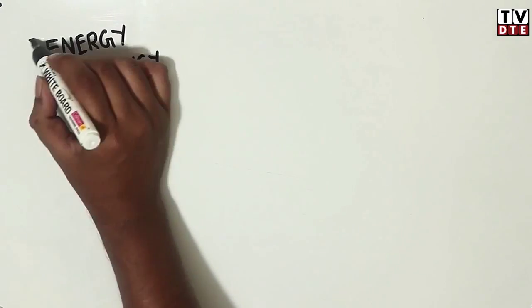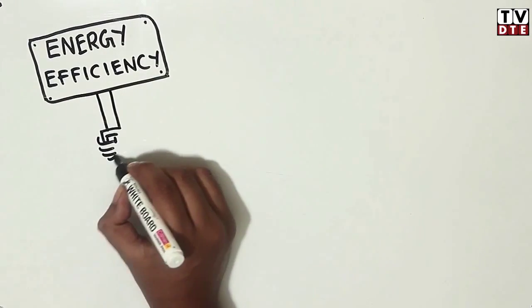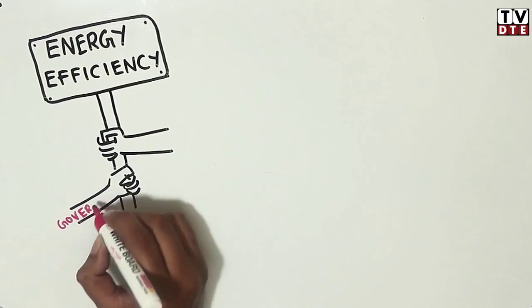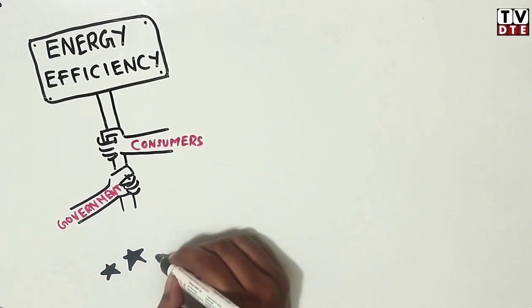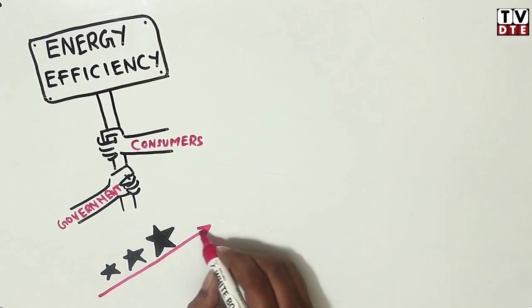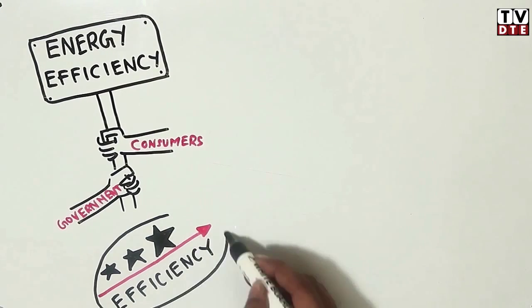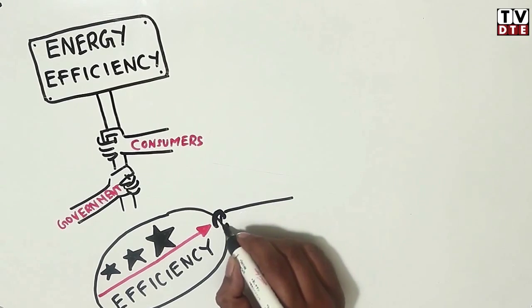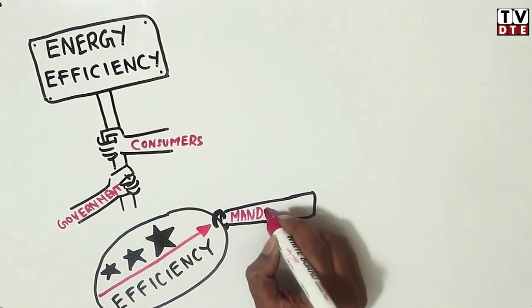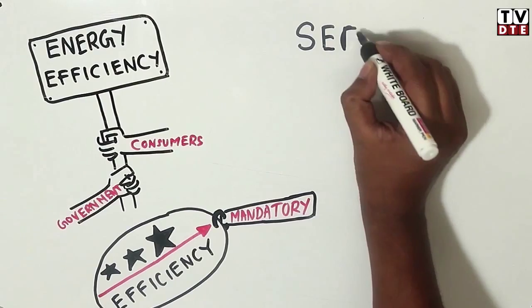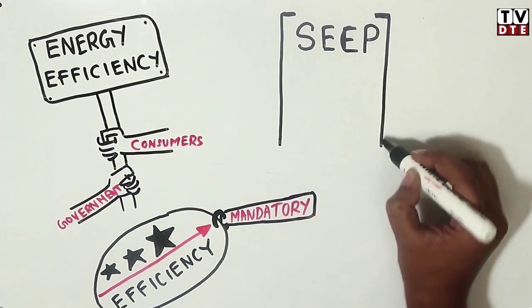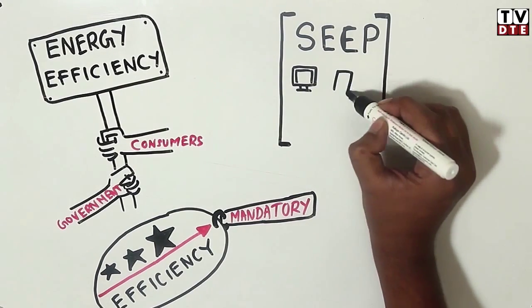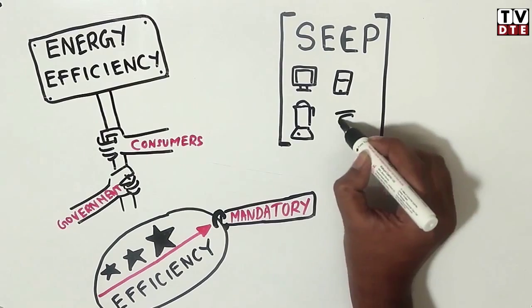The push for energy efficiency needs to come both from the policy makers as well as consumers. The government needs to rework its star rating program to achieve higher efficiency standards. At the same time, it needs to make it mandatory for all appliances. The newly launched SEEP needs to be implemented and expanded to cover other appliances as well.